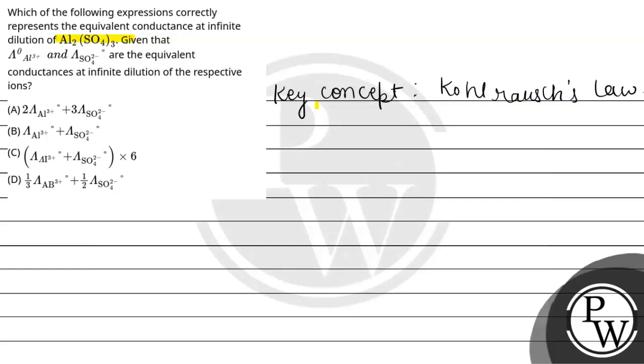Now, what we have given is Al₂(SO₄)₃. First of all, let's see how it dissociates. It will dissociate like Al³⁺ and SO₄²⁻.